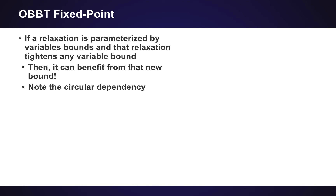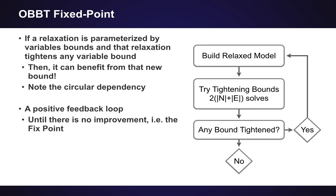There's another key observation. If the relaxation is parameterized by variable bounds and we use that relaxation to tighten variable bounds in our problem, it can actually benefit itself from the new bounds it calculates. There's a circular dependency: if you use a relaxation to improve a bound, that relaxation will become tighter with the bound it computed itself. So instead of doing this once, what you want is a positive feedback loop — build the relaxed model, try to tighten all the bounds, and if any were tightened, the relaxed model could be even better, so you rebuild it and tighten them all again. This is guaranteed to converge in a finite number of steps because all problems are convex and tightening bounds is a monotone operation, but it could take 10 rounds or a hundred rounds.